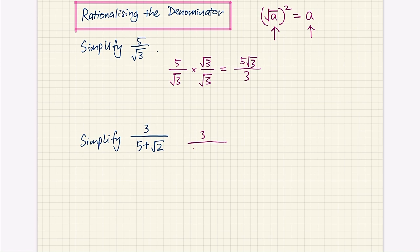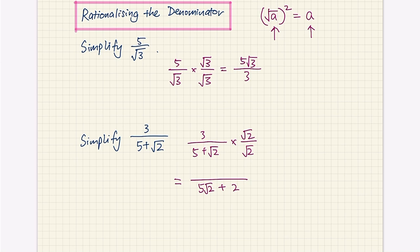I'm going to rewrite 3 over 5 plus root 2, and take the same approach by multiplying by root 2 top and bottom. Multiplying the denominator first, even without multiplying the numerator, we can already see a problem. In our denominator we have 5 root 2 plus root 2 times root 2, which gives a 2. We can already see that the denominator still has a root 2 in it, which means the problem is not resolved. So we're going to have to take a different approach.